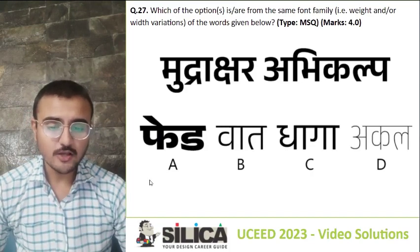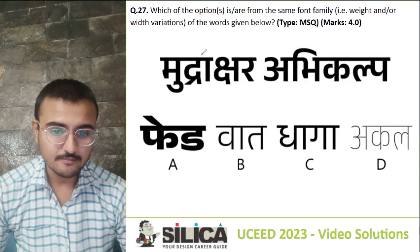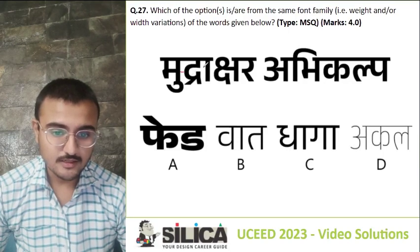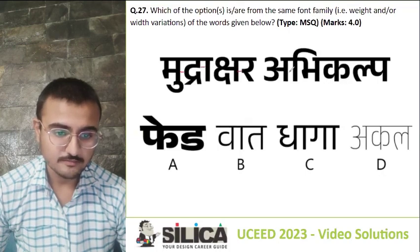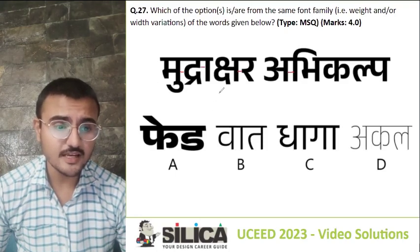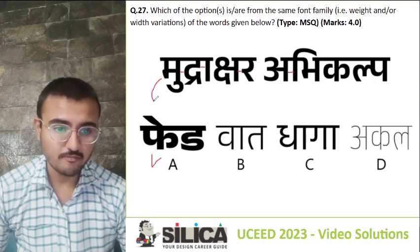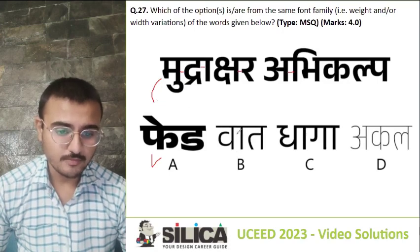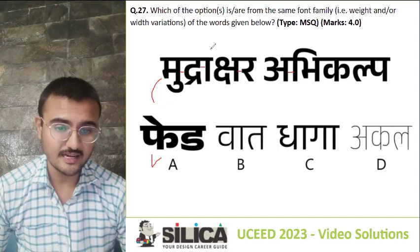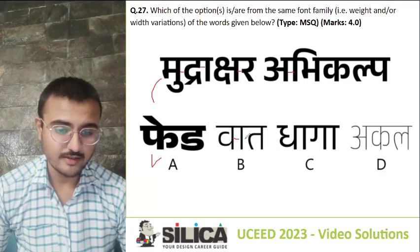While we are talking about line weight and width, we can easily see the distance between two letters. If we increase the size and increase the thickness or line weight of a particular typography, then option A is correct because it is from the same font family. Similarly for option B, if we decrease the thickness, we can see the distance between the two letters is greater.